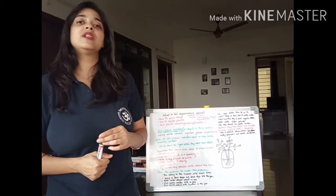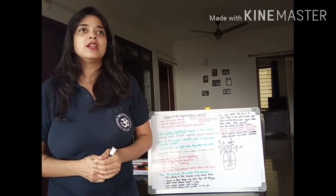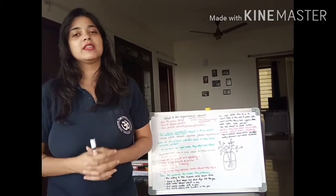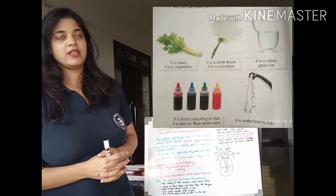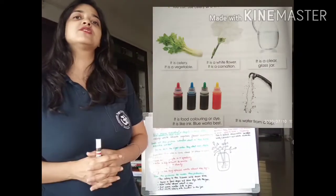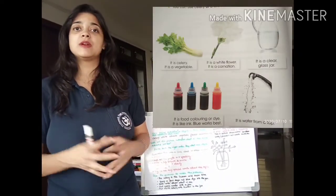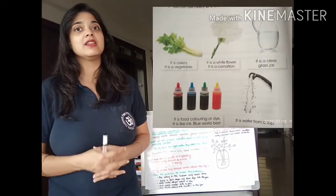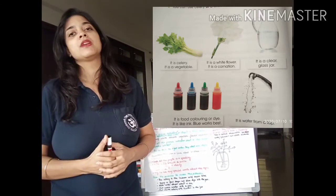Today, we will learn about a few more experiments. Look at these pictures. There are a few pictures of flour, a vegetable — celery — and a carnation.